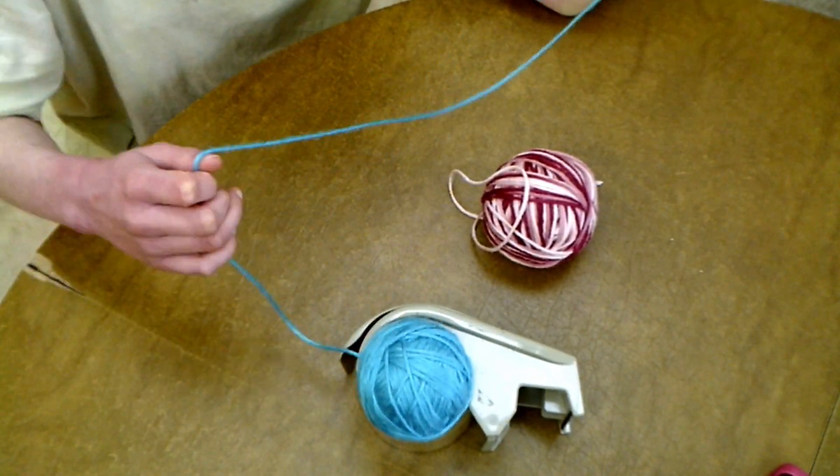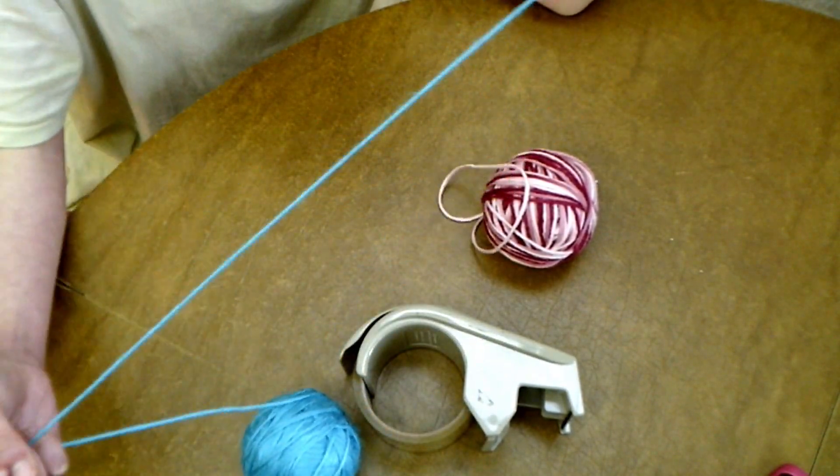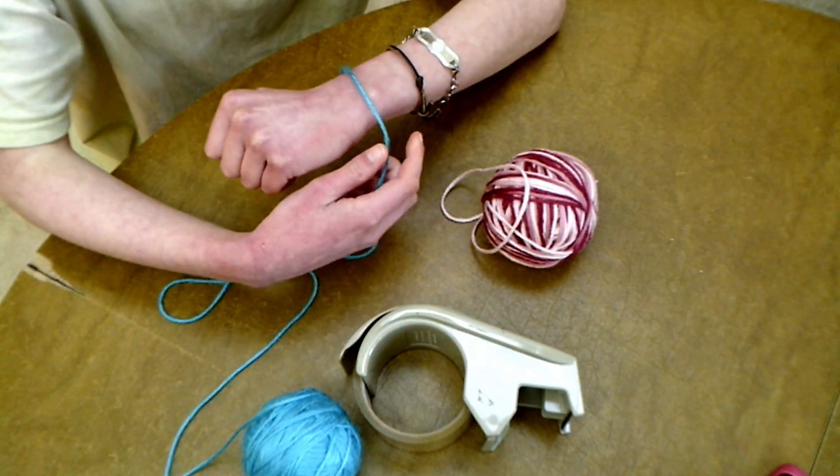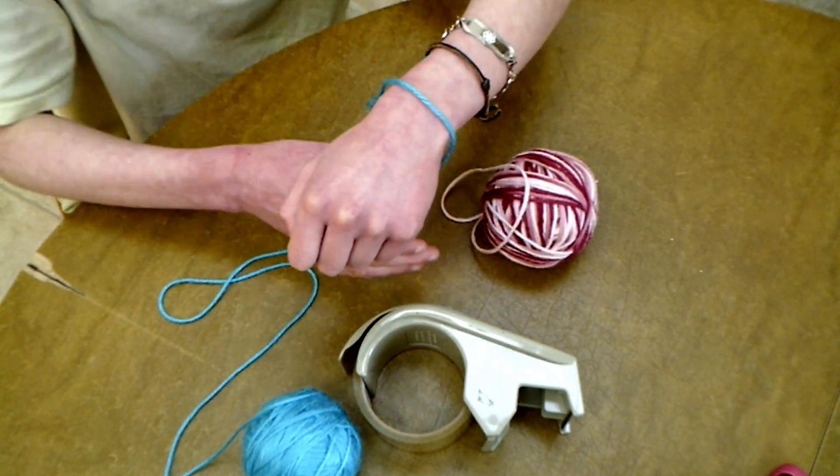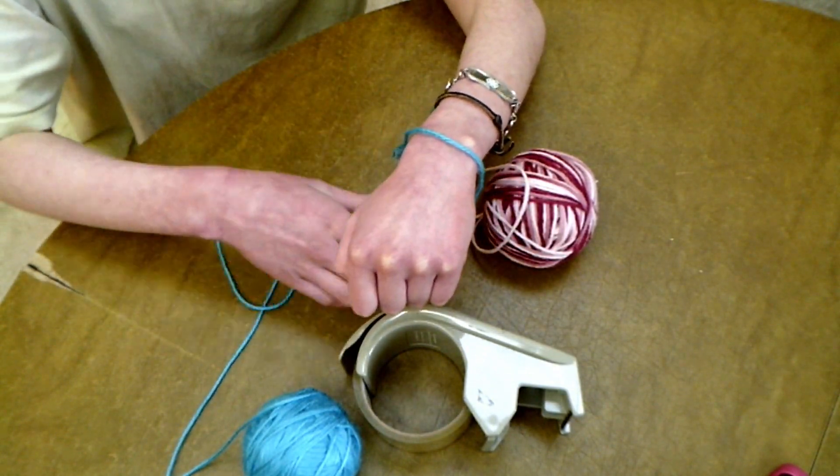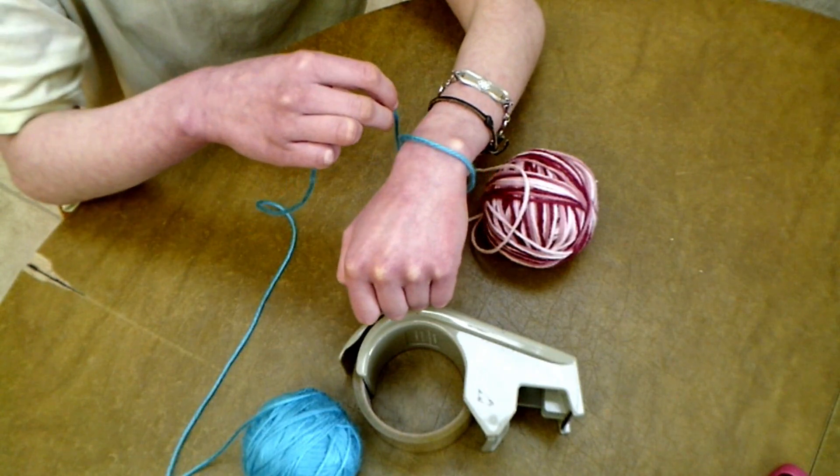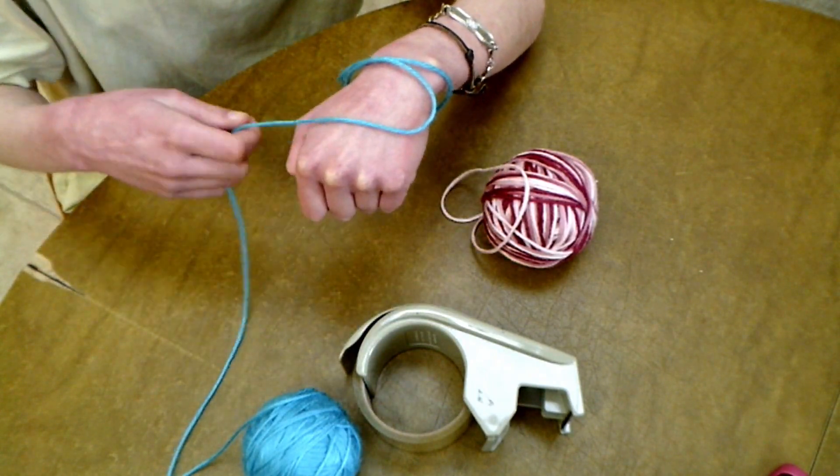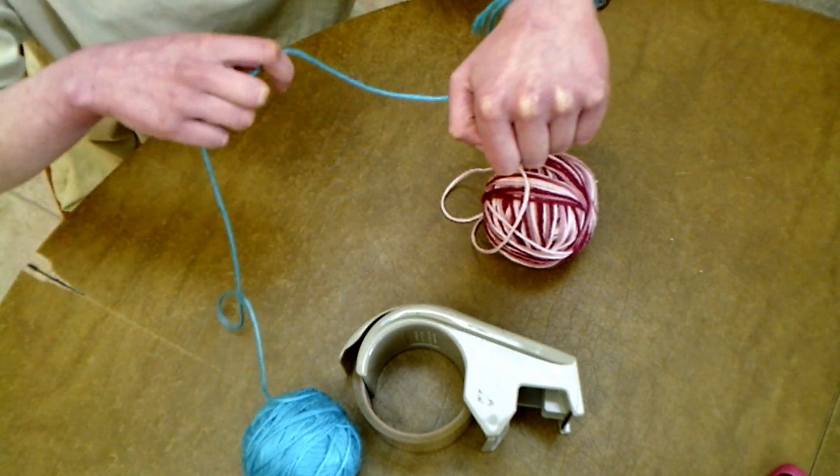So first, we're going to use this blue yarn and measure around your wrist. And I like to go around two times so you make sure to have enough. So, one, two, five.